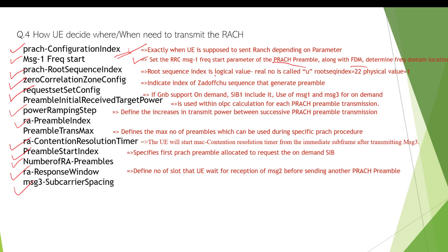The root sequence index is a logical value. Whatever comes in the SIB message, the exact physical value is U. For example, if the root sequence index value is 22, it maps to a different physical value — here the physical value maps to 1. The zero correlation zone config indicates the index of the Zadoff-Chu sequence that generates the preamble. The preamble is generated from this method using one of 255 possible preamble formats.